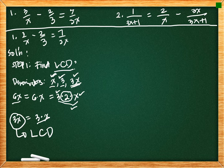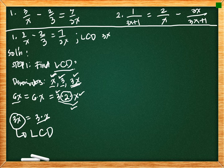That is how you find an LCD when given a rational equation — consider all the denominators and find a particular expression whose factors are only those denominators. The LCD for example one is 3x. Just inspect the denominators and find the expression whose factors are composed of those denominators. Now we are ready to move to step 2.